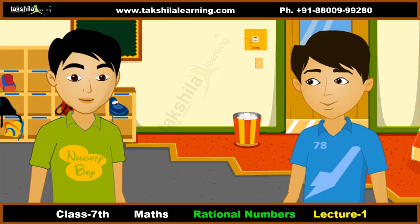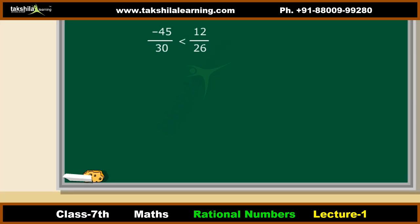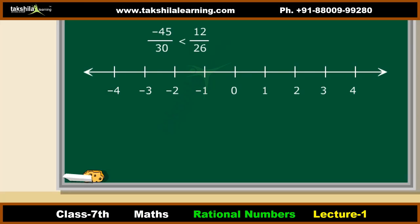To compare two rational numbers: a negative number is always smaller than a positive number. We can also compare rational numbers using the number line — the further right a number is, the greater it is. For example, 2 by 3 lies to the right of 1 by 3, so 2 by 3 is greater than 1 by 3. Similarly, minus 1 by 3 is greater than minus 2 by 3 because minus 1 by 3 is to the right of minus 2 by 3.